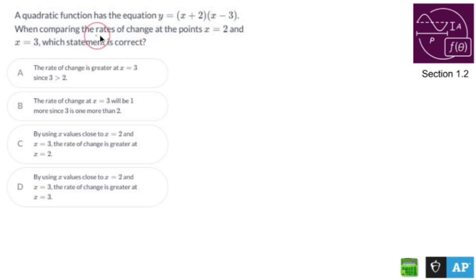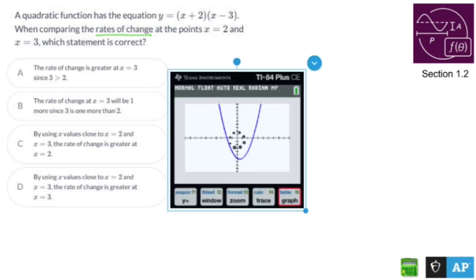Now thing number one, it mentions rates of change. It mentions nothing about average rates of change. So if you're thinking f of b minus f of a, stop it. Thing number two, this is a calculator problem. So let's pull up a picture of what you see on the calculator.